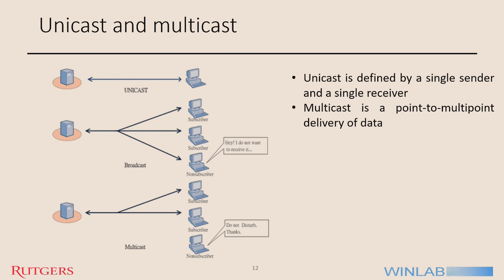Before going on, here is a brief overview of unicast, broadcast, and multicast. Unicast is defined by a single sender and a single receiver — point-to-point communication between two entities. Broadcast is point-to-all-points, whereas multicast is point-to-multipoint: I select a few users and send them data in a single transmission.